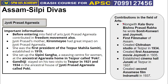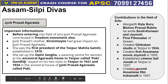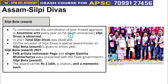In the field of art, Jyoti Prasad Agrawala, along with Kala Guru Bishnu Prasad Rabha, wrote 'Sonit Kundori' and 'Joymoti.' He was Assam's first filmmaker; he created the Chitraban Studio at Tejpur in 1934, produced the first Assamese talkie 'Joymoti' in 1935, established cinema hall 'Junaki' at Tejpur in 1937, and created the second Assamese film 'Indra Malati' in 1937.